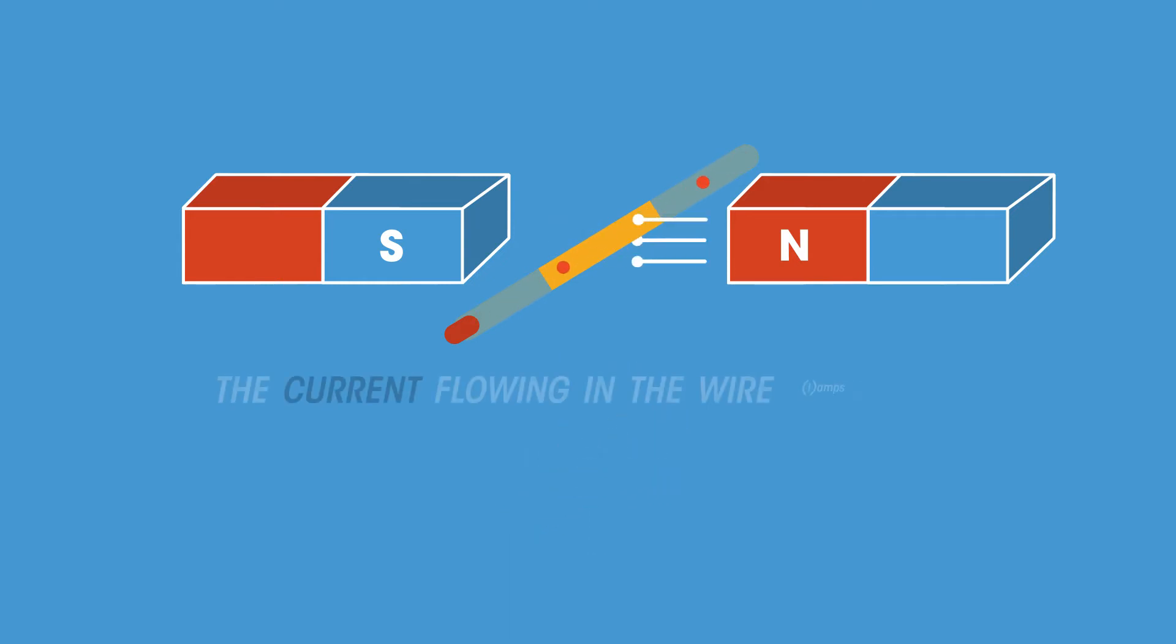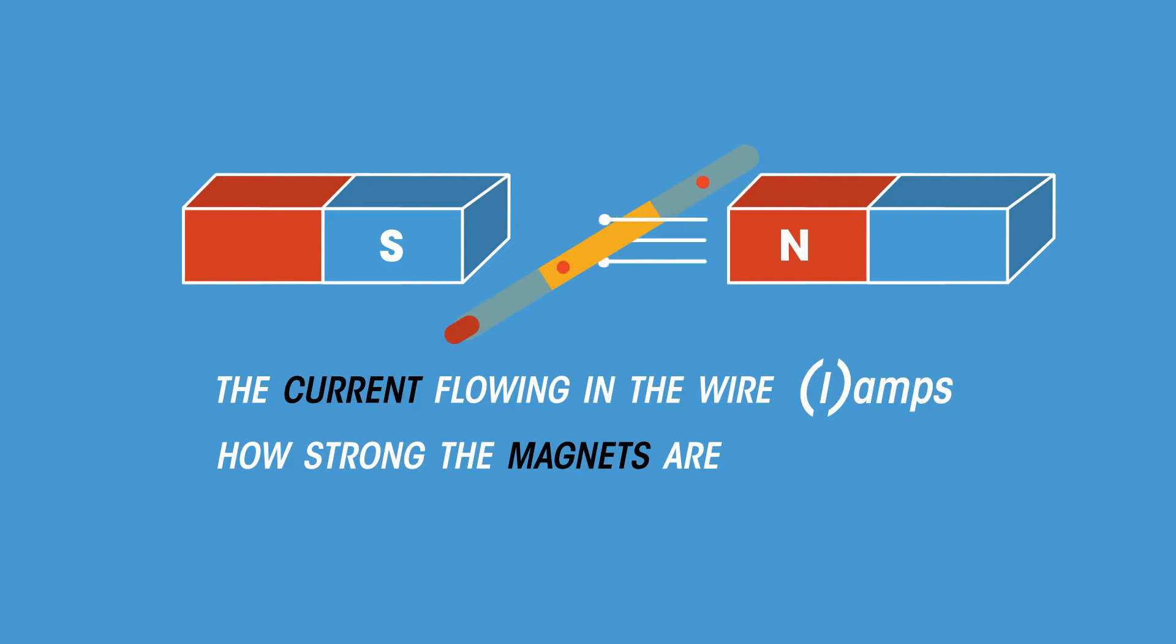The current flowing in the wire I, measured in amps, because it is the current that creates the magnetic field around the wire that interacts with the magnetic field of the magnets. How strong the magnets are - this is related to a quantity called magnetic flux density B, which is measured in Tesla.